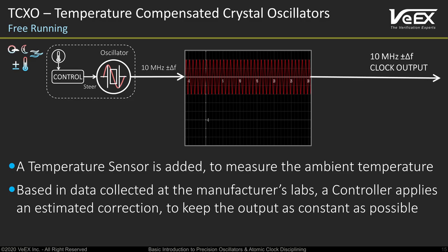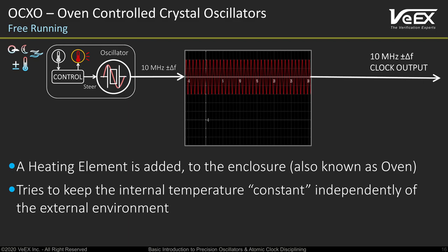But wouldn't it be nice if the temperature around the oscillator doesn't change? To achieve that, a heating element is added to the oscillator enclosure to keep the internal temperature as constant as possible — then it becomes an oven controlled crystal oscillator, or OCXO. For example, if an OCXO is designed to run at an ideal internal temperature of 60°C and the environment is at 40°C, the controller applies a little current to the heater. If the environment temperature is zero, the controller applies more power to bring it to 60°C. The stable temperature makes it even more accurate and stable, though the design can be power hungry.